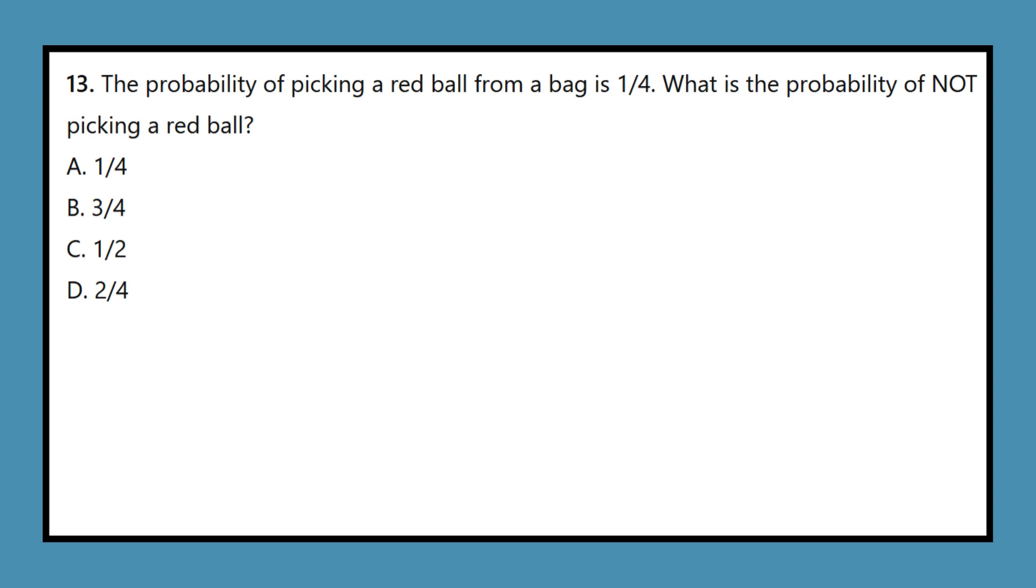Question 13: The probability of picking a red ball from a bag is 1 quarter. What is the probability of not picking a red ball? A. 1 quarter, B. 3 of 4, C. 1 half, D. February 4.